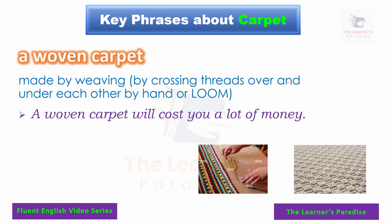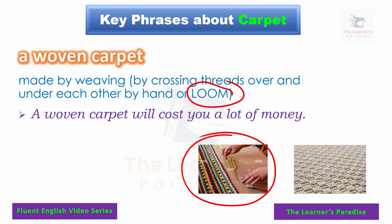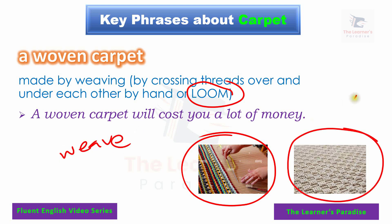Next, we have a woven carpet — a carpet that is made by weaving. Weaving is when you knit with your hands or use a machine called a loom, putting threads one on top of the other. The final product can look like this. Example sentence: a woven carpet will cost you a lot of money.